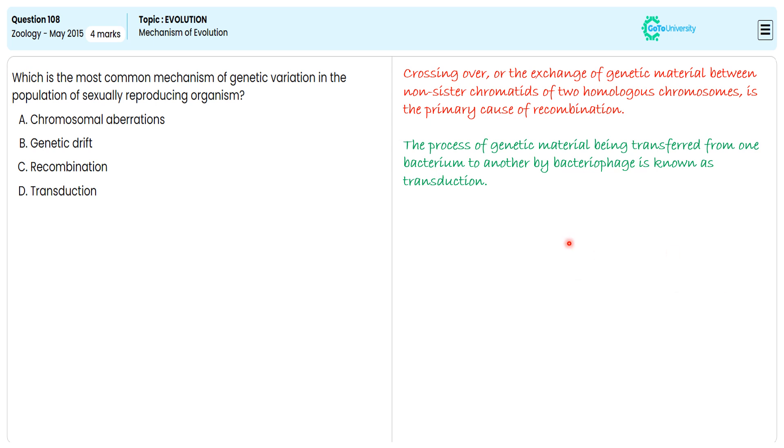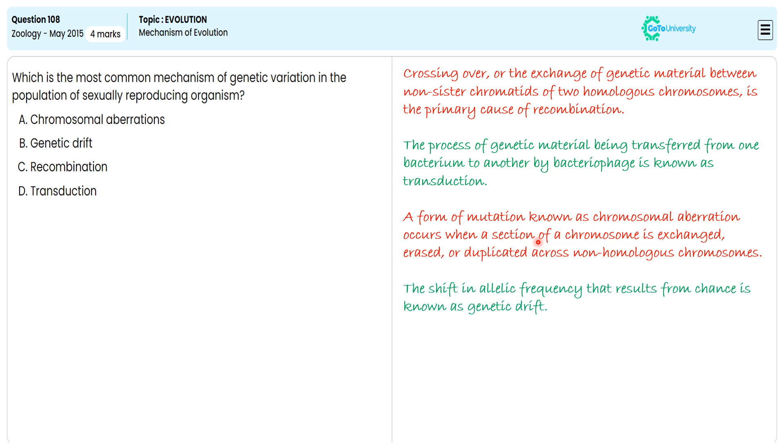The shift in allele frequency that results from chance is known as genetic drift. Recombination is the most frequent process of genetic change in the population of an organism that reproduces sexually.